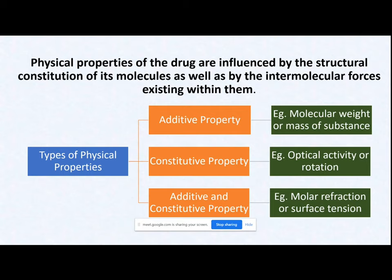If we divide physical properties by type, we have three different categories. First is additive. Second is constitutive. Third is additive and constitutive. Additive — the name itself tells us: additive properties of a substance are the sum of the corresponding property of each individual atom. Every atom contributes its own property, and the overall drug property is the addition of all those atomic contributions.